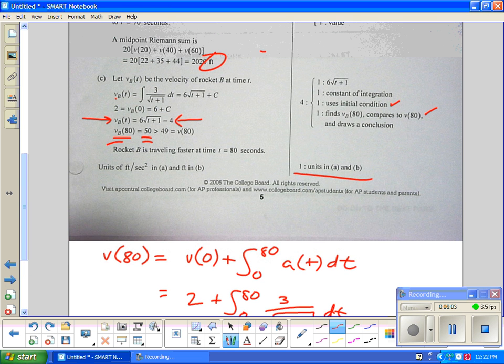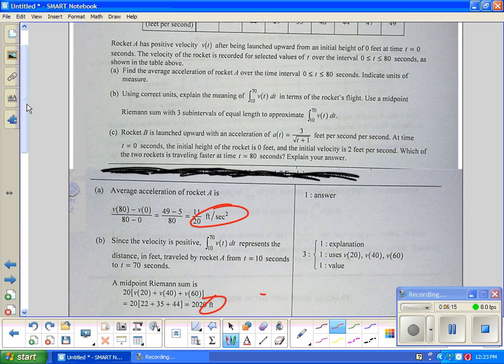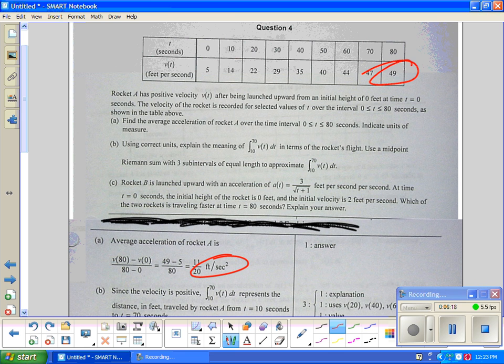If you're gonna get this, you still have to have some sort of comparison between the rockets because they want you to show you understand that rocket A is going 49. That you understood that you had to read that value from the table. That you didn't have to do any work for that value. That's an important realization.